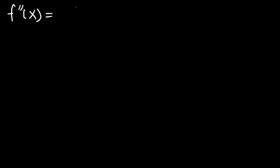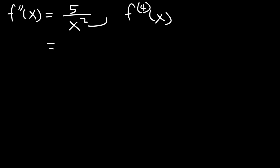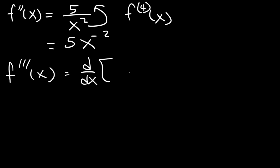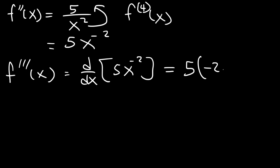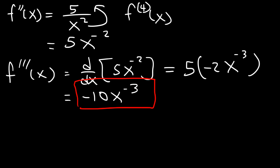Now let's work on one more problem. Let's say if you're given the second derivative and it's 5 over x squared. Go ahead and determine the fourth derivative of the function. First, we need to rewrite the expression — this is the same as 5x to the negative 2. So we already have the second derivative. Let's find the third. The derivative of 5x to the negative 2 is 5 times negative 2x to the negative 3, and 5 times negative 2 is negative 10. So the third derivative is negative 10x to the negative third.